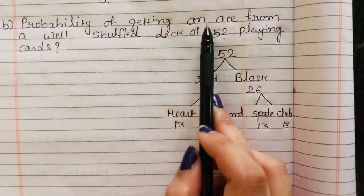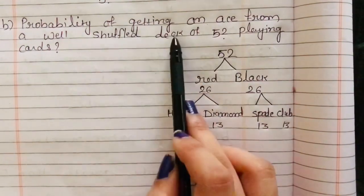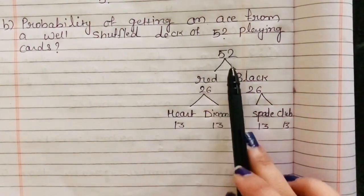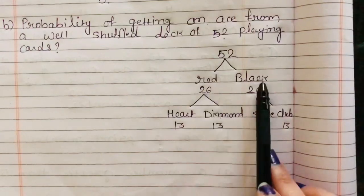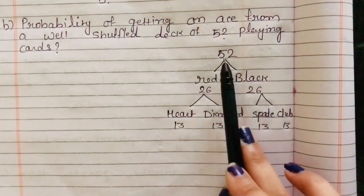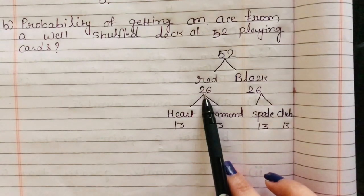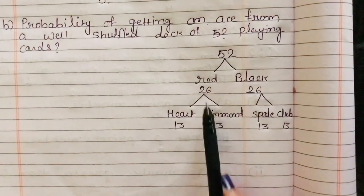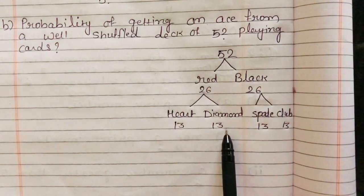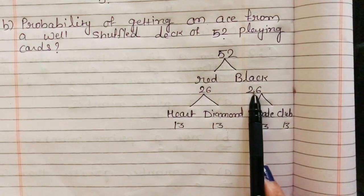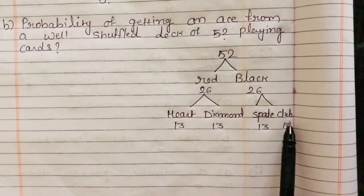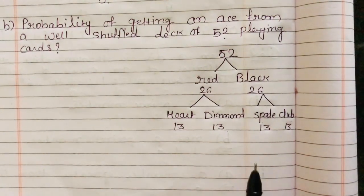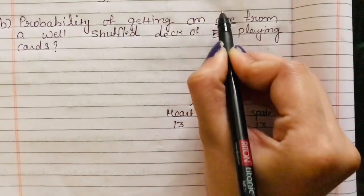Probability of getting an Ace (S) from a well-shuffled deck of 52 playing cards, हमें S की probability find करनी है। 52 playing cards में क्या-क्या होता है — 2 colors होता है, one is red and one is black। So 52 divided by 2 — 26 red होंगे and 26 black होंगे। Then red में भी two categories है — heart and diamond। So 26 में से 13 heart के होंगे and 13 diamond के होंगे। And black में भी two categories है — 13 spade होंगे and 13 club होंगे। Now हमें Ace (S) find करना है।